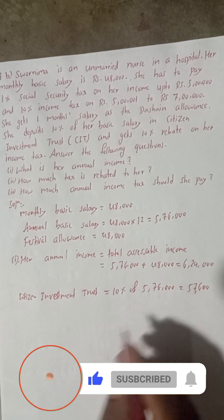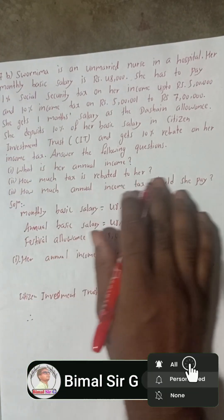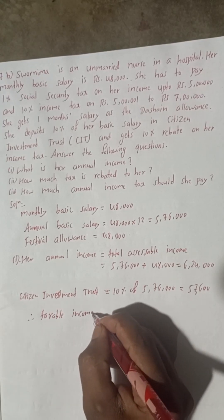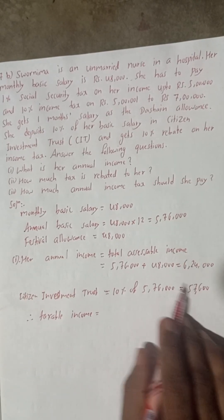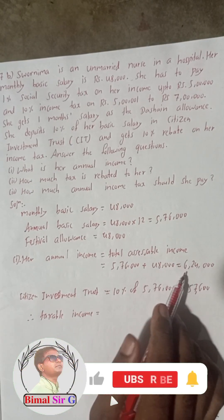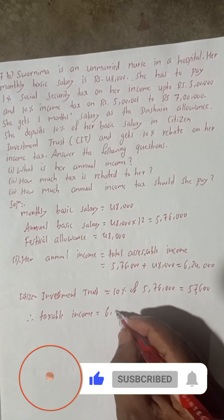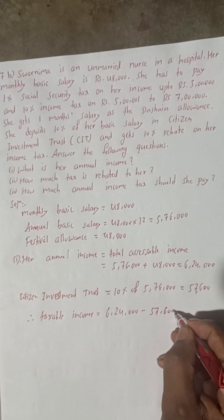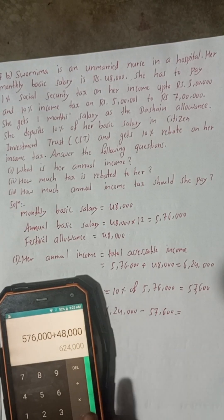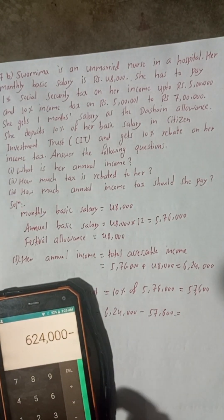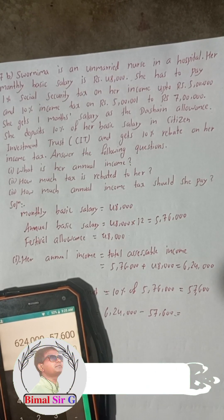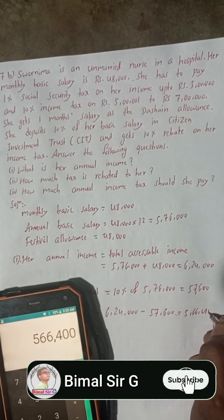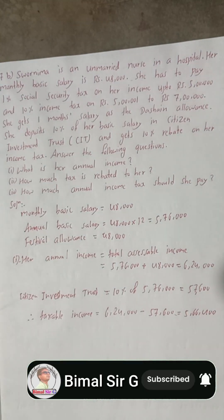Therefore, taxable income = annual income minus CIT deposit = 6,24,000 − 57,600 = Rs. 5,66,400. This is our taxable income.